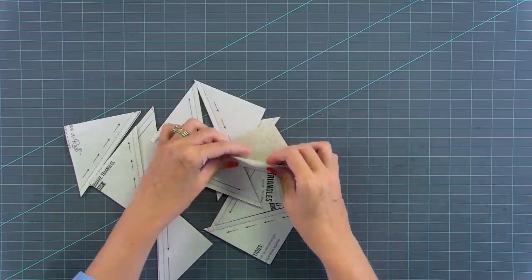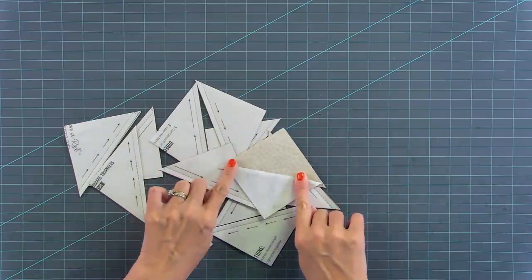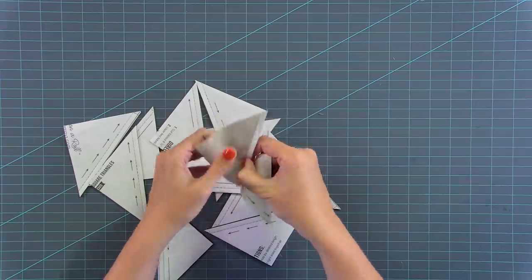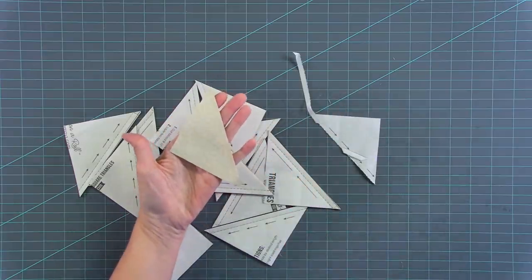And then what I like to do is pull my paper back, put it on the crease and just pull your paper off. And you're going to do that on all 12 and then I'm going to show you how to iron.